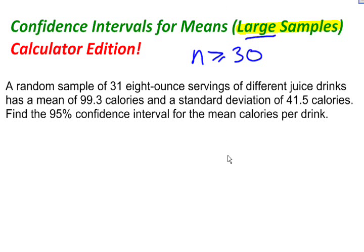I'm not even going to look at the formula for confidence intervals. I'm just going to go straight to the calculator and show you how you can find it. A random sample of 31 eight-ounce servings of different juice drinks has a mean of 99.3 calories and a standard deviation of 41.5 calories. Find a 95% confidence interval for the mean calories per drink.